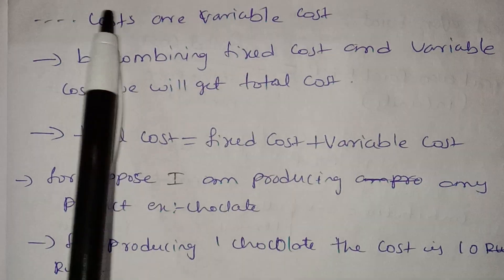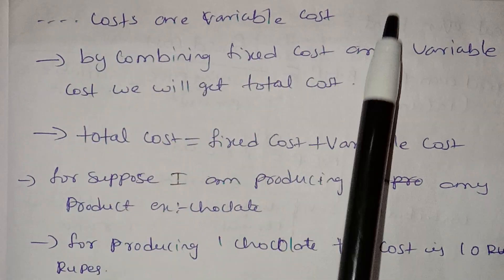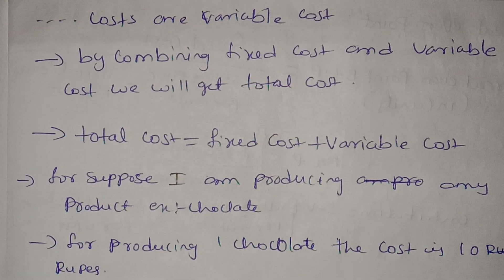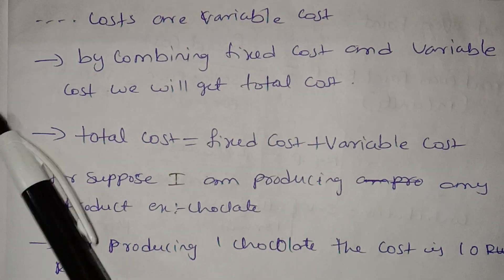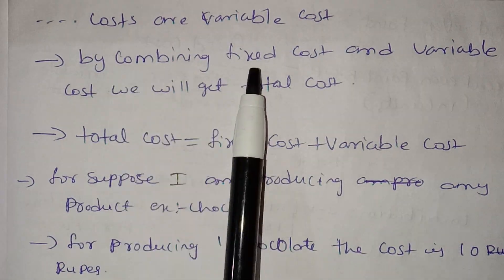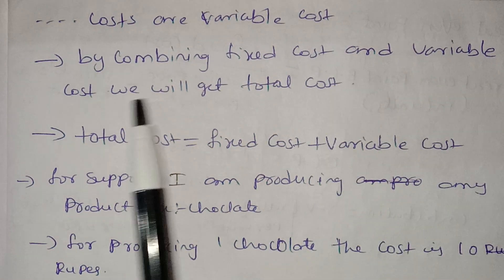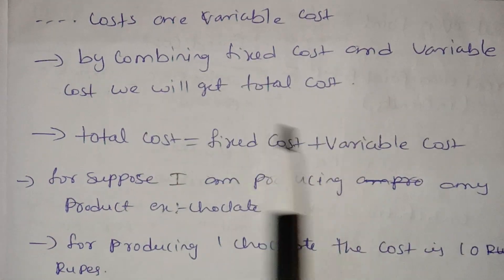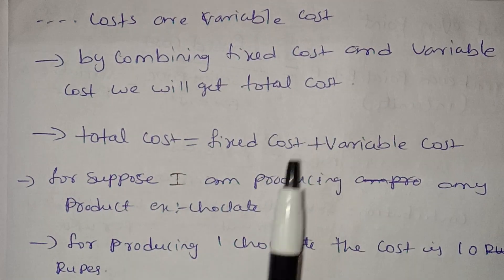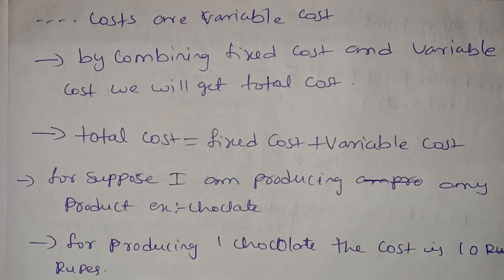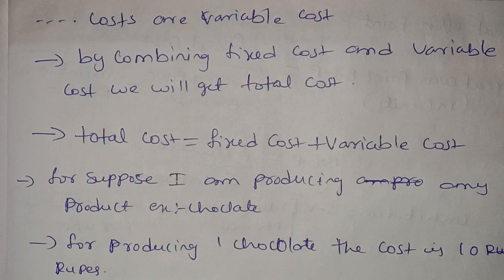Variable costs include wages and raw materials. By combining fixed cost and variable cost, we get the total cost.